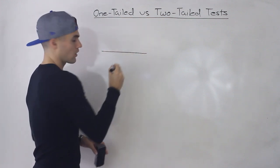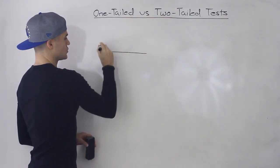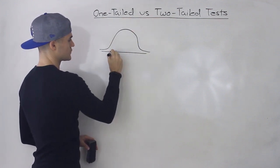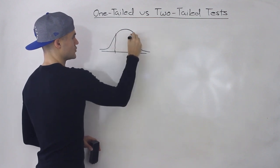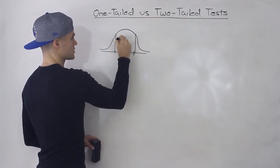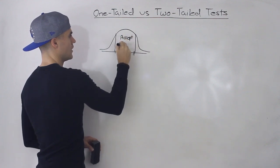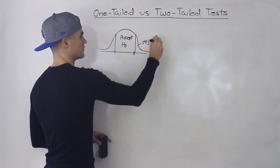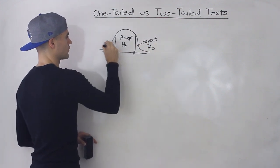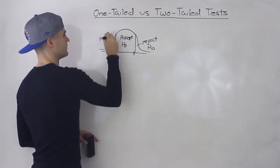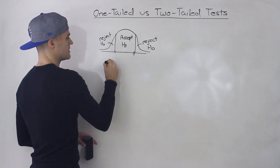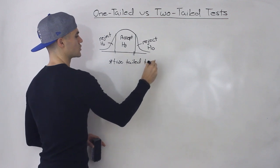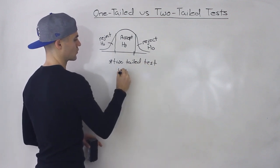So far with the examples I've been showing you, I've been mostly showing you two-tailed examples up until this point. The way I like to think of two-tailed tests — if we draw the acceptance versus rejection region — here we are accepting the null or failing to reject the null, and then here we are rejecting the null in this area, and over here we have the critical values. The reason why this is a two-tailed test is because there are two rejection regions.